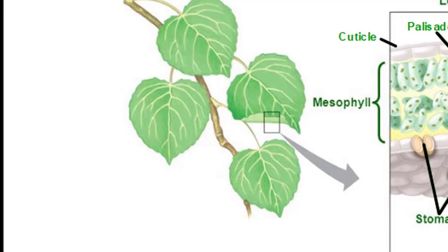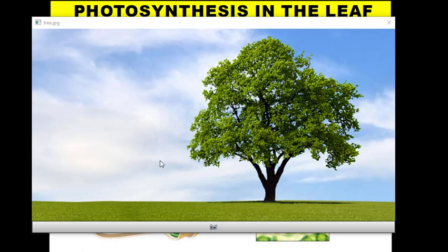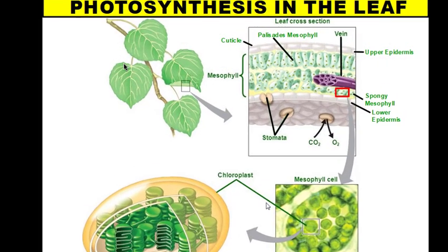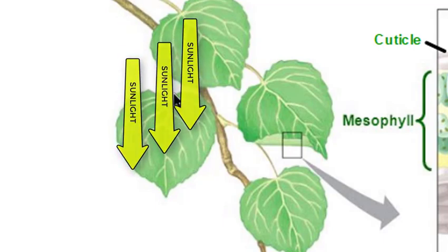Photosynthesis primarily occurs in the leaves of a plant. Looking at a photograph of a tree, you'll notice that the leaves are the green structures at the top. The reason leaves are at the top is because they're designed to catch sunlight — what better place than near the top of the tree. When we look at the structure of a single leaf, you'll notice it's broad and flat, like nature's original solar panel. That broad surface maximizes the area available to absorb sunlight, making leaves perfectly adapted for this job.